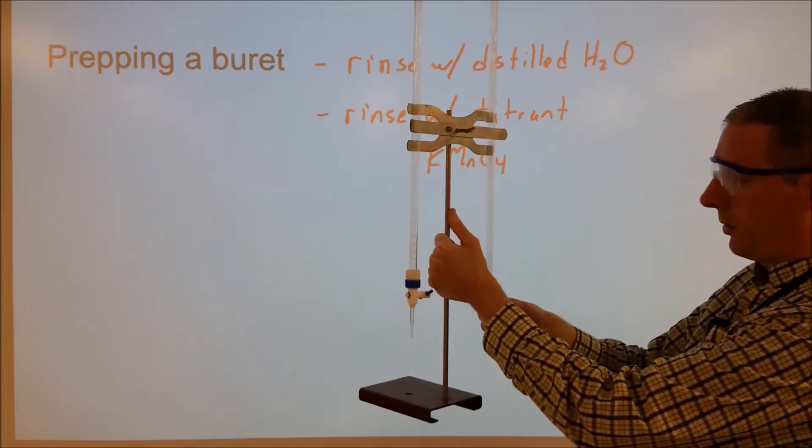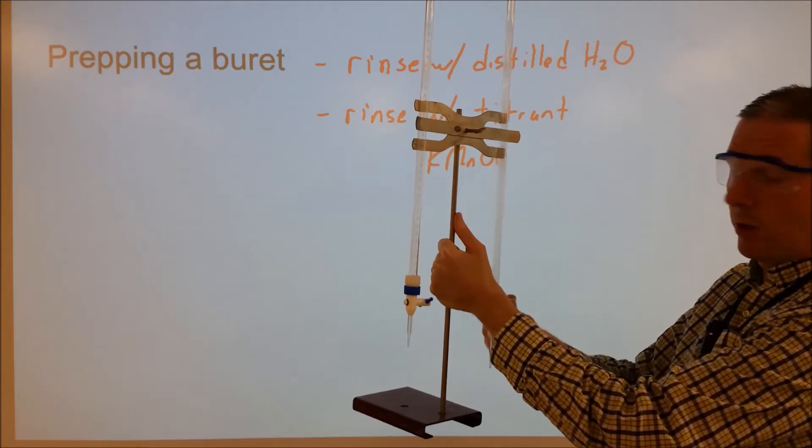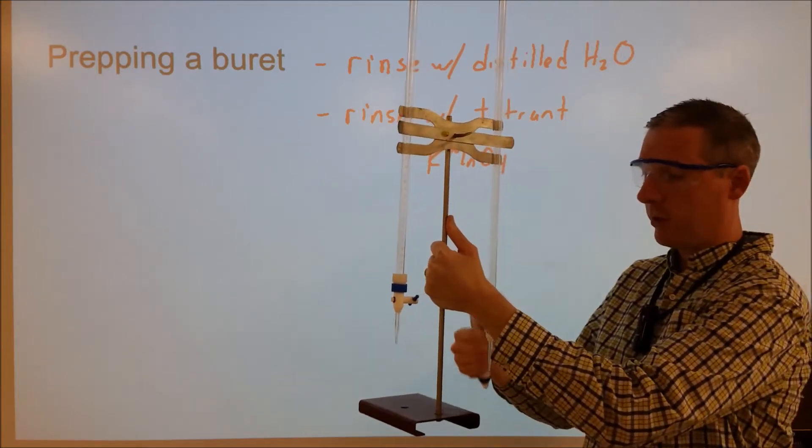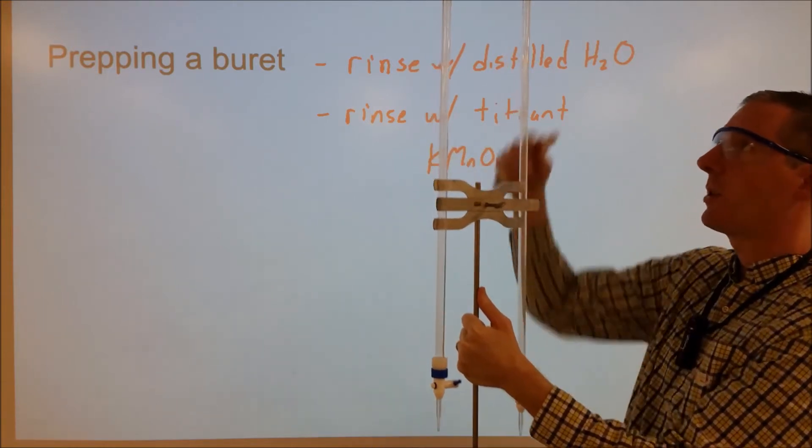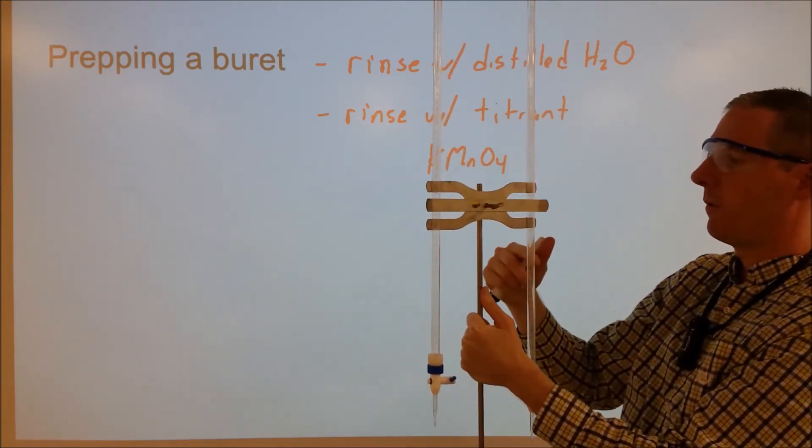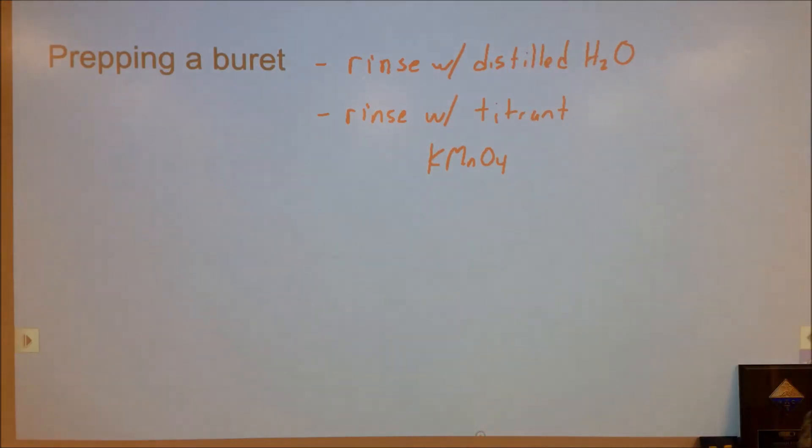As you add the solution from the bottom here, as you open this up and allow the solution to come out, it's going to react with the solution below it, eventually causing a color change. At that point we stop and we note the difference in volume in the burette, and from that we can figure out the volume of the chemical that reacted.